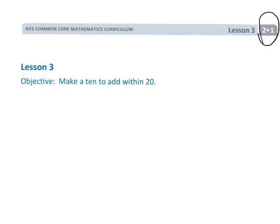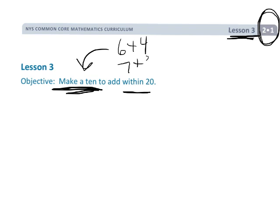All right, this is grade 2, module 1, lesson 3, where we're going to be making 10s in order to add within 20. So all the stuff that we were doing in terms of number pairs that added up to equal 10, like 6 plus 4 and 7 plus 3, we're going to make use of that to add some bigger problems.